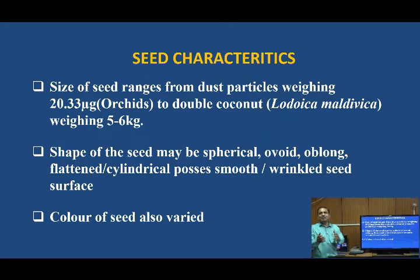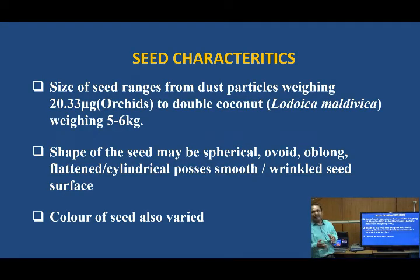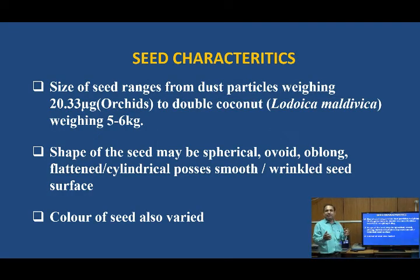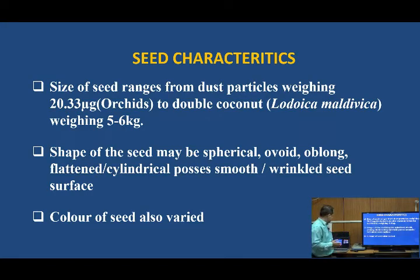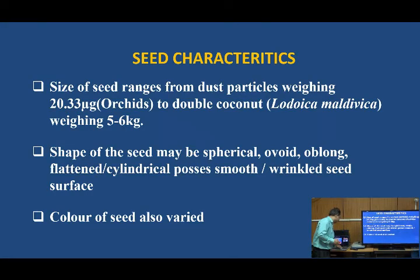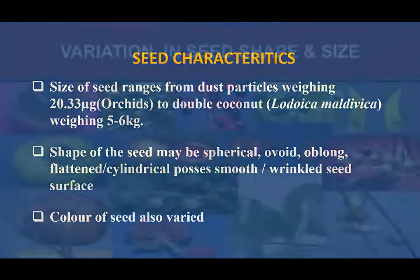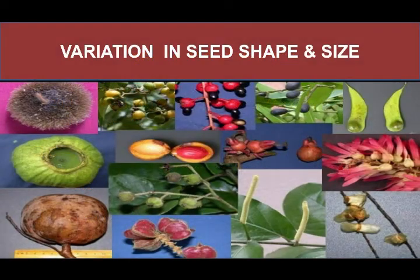The color of seeds also varies from one species to another. Even within the species, the color of seeds varies. For example, in soybean there are different colors — white soybean and black soybean. In this slide we can see the variation in color, size, and shape of seeds. There are large numbers of, large variations.